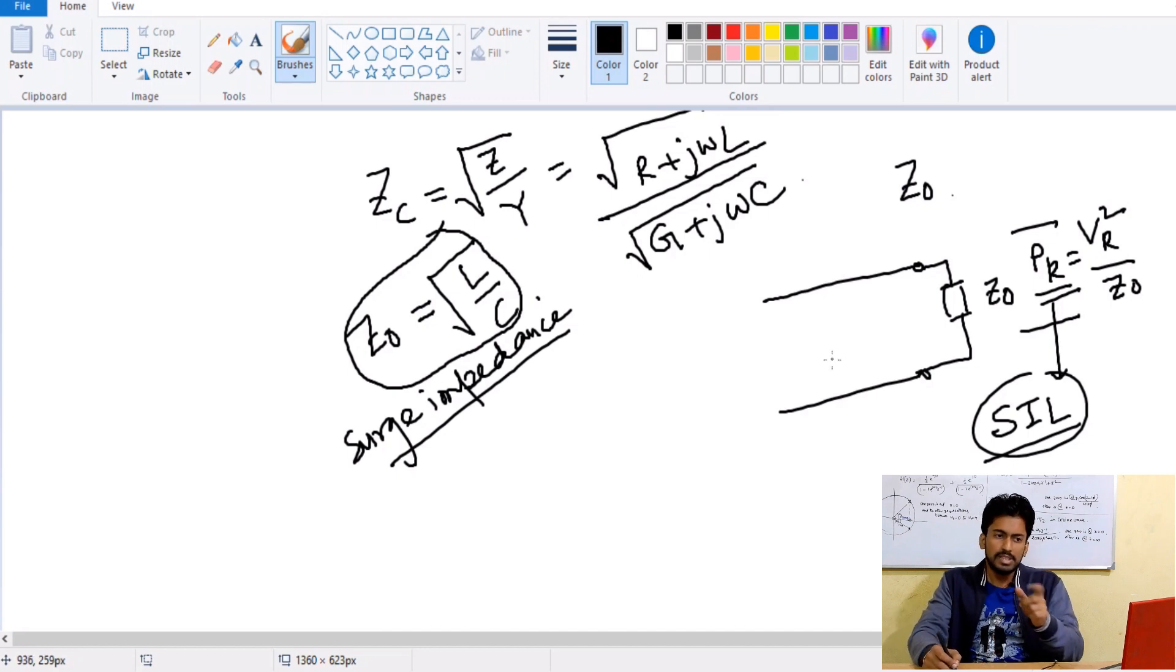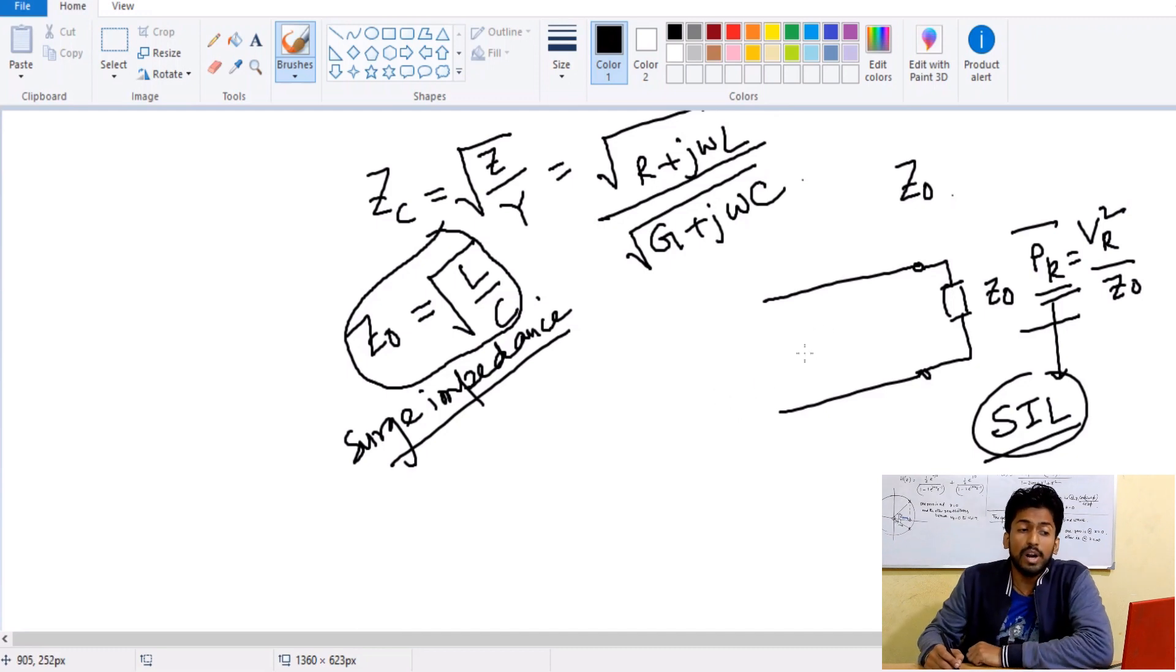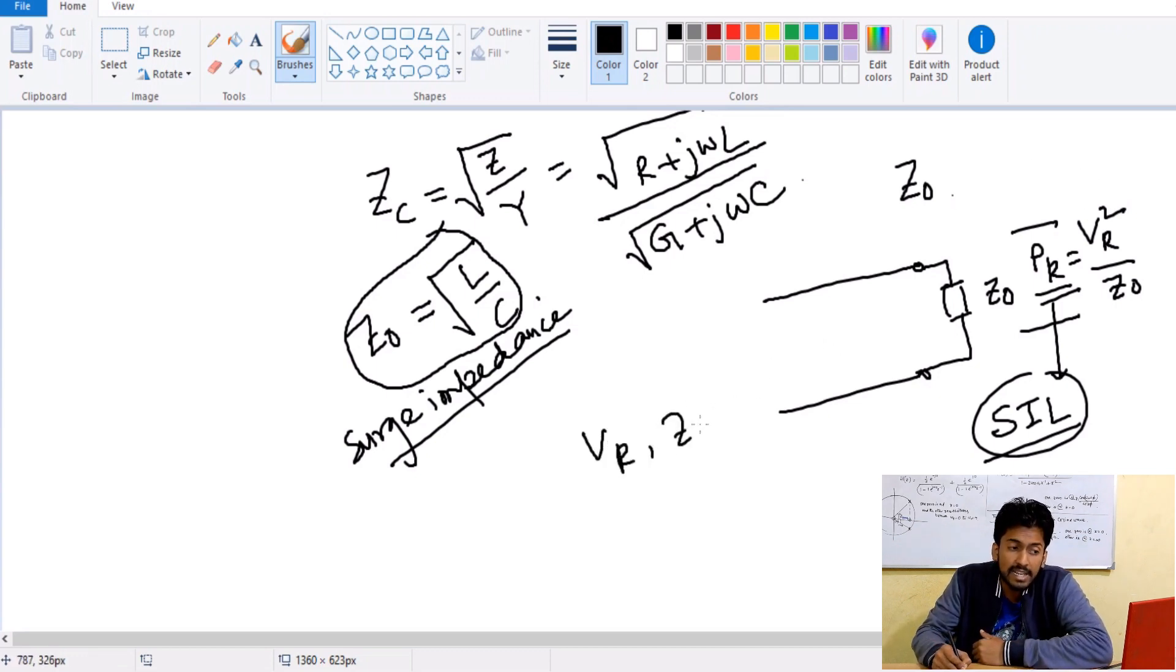For which the stability will not be affected and other parameters will remain stationary. For this reason, this is a very good parameter to actually calculate the whole system parameters of the transmission line. Now if you want to note the loading effect to be increasing higher and higher, then there are two variables here: V_R and Z naught.